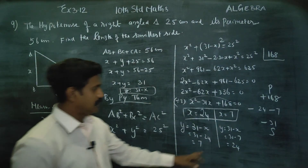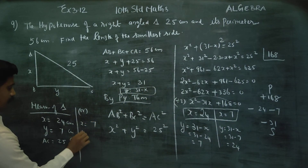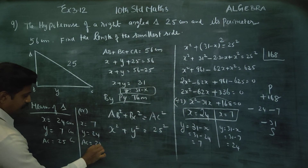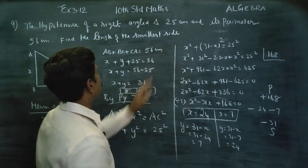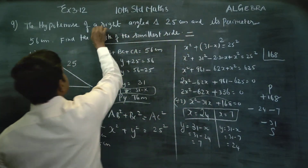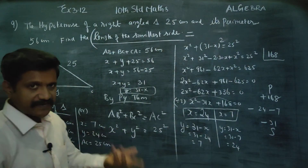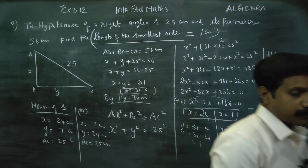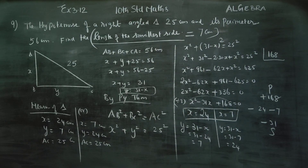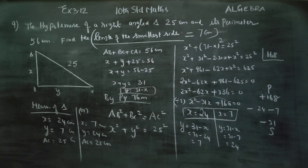So x equals 7 and y equals 24. The length of the smallest side is equal to 7 centimeters. If you have any questions about quadratic equations, how to form the equation, or how to find the product and sum, feel free to ask.